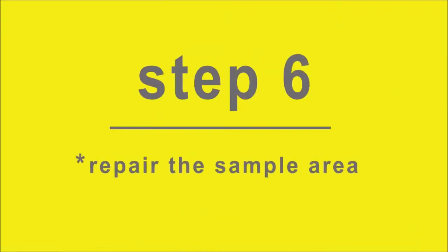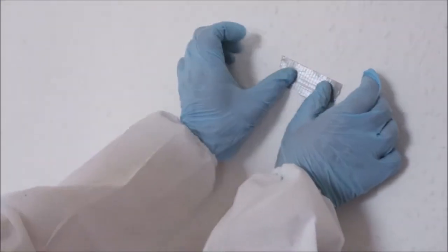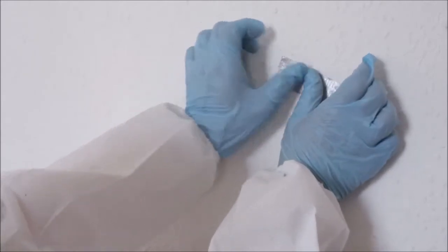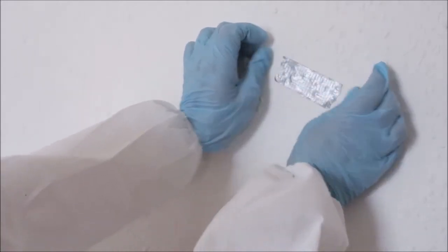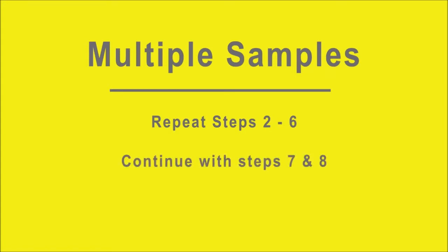Step 6. Repair the sample area. Seal the sample point in order to prevent any future fiber release by either using a strip of tape or by painting the sample area with a small paintbrush. If you have purchased a multiple sample kit and are taking samples from other areas, repeat steps 2 to 6 and, once all samples have been taken, continue with steps 7 and 8.